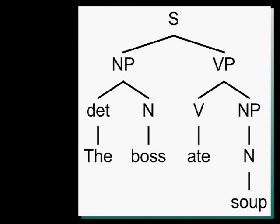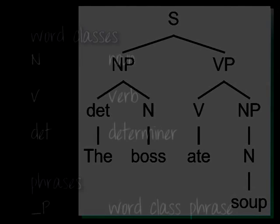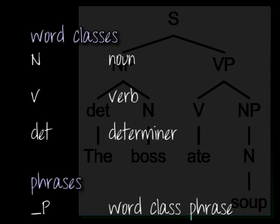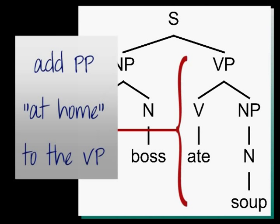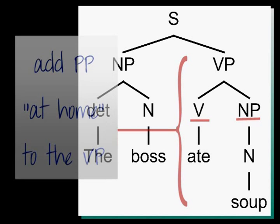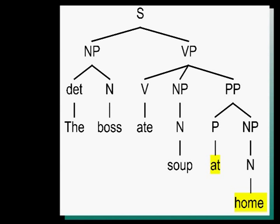The tree still relies on terms for word classes, which traditional grammarians call parts of speech, like noun, verb, preposition, or determiner. What if I want to add a prepositional phrase like "at home" to the sentence? We have to expand the nodes in our verb phrase. Instead of just the node for the verb and the noun phrase, we now need a prepositional phrase. But this structure — verb, noun phrase, prepositional phrase — starts to flatten out our tree.